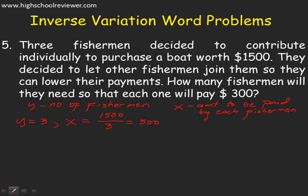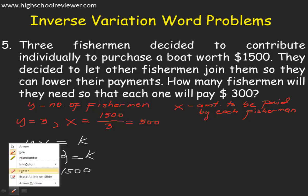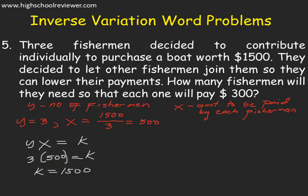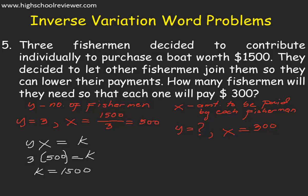Finding the initial values: 3 fishermen, so Y is 3. The amount to be paid by each fisherman is $1,500 divided by 3, so X is 500. Using the equation Y multiplied by X equals K, we have 3 multiplied by 500 equals K. So our K is 1,500. For the second values, Y is the unknown — how many fishermen — and X is equal to 300.